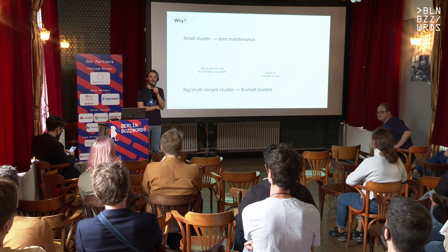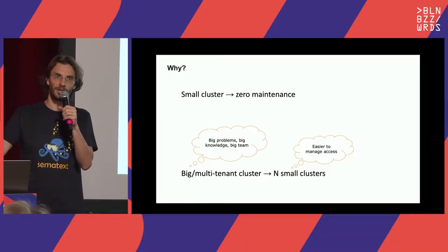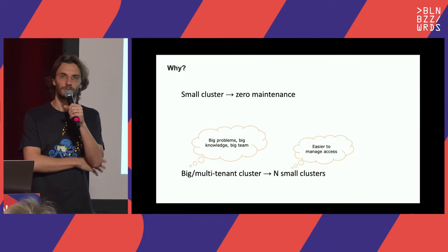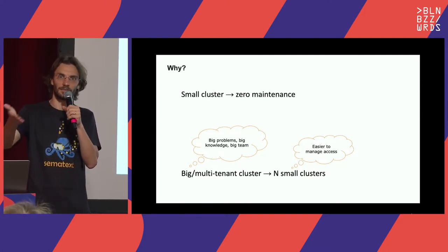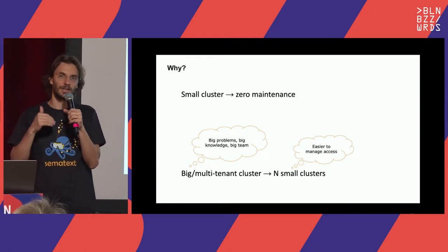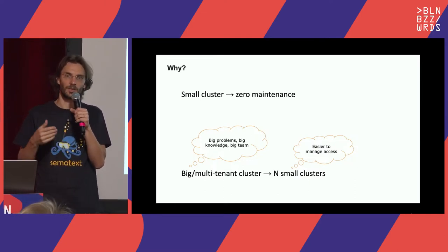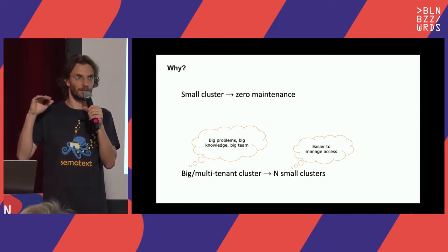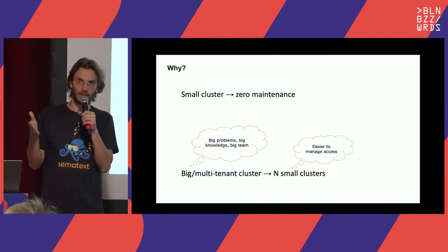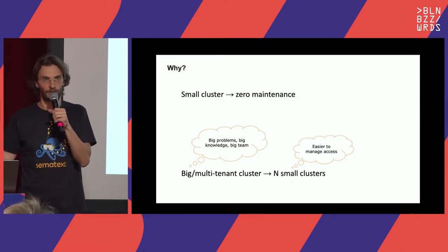Let's start with the use case. If we have a small Elasticsearch cluster, we want to automate as much as possible — the dream buzzword is zero maintenance. We want to give people a cluster they can send logs to and not worry too much about it. Larger clusters tend to be more like snowflakes, requiring more awareness of load patterns and mappings. But in some situations, like a multi-tenant application, you might have one cluster per tenant, giving you many small clusters that can hopefully manage themselves.